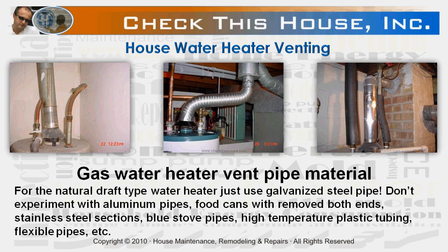Now let's talk about the second component of the water heater venting system: the vent pipe itself. For the natural draft water heater, you should be using galvanized steel pipe only. Do not experiment with aluminum pipes, food cans with removed both ends, stainless steel sections, blue stove pipes, high temperature plastic tubing, flexible pipes, etc. Also, make the vent pipe section between the water heater and the chimney as short and as straight as possible. The common rule is that the horizontal part of the single wall vent pipe must be equal to or shorter than 75% of its total developed height. Check my post for a picture explaining it.